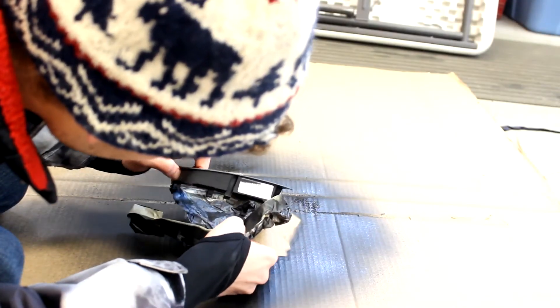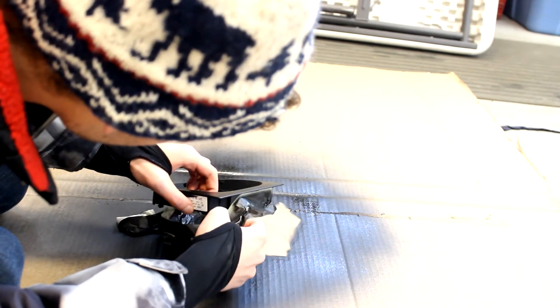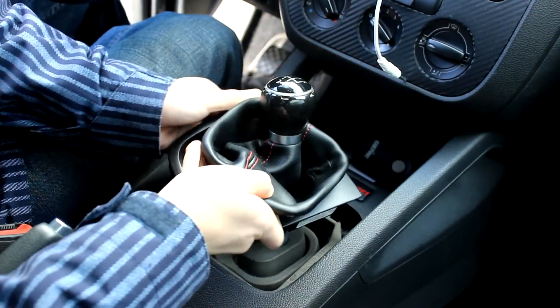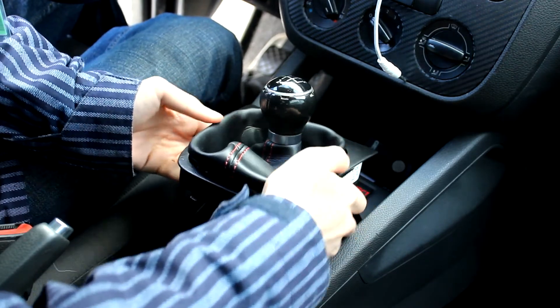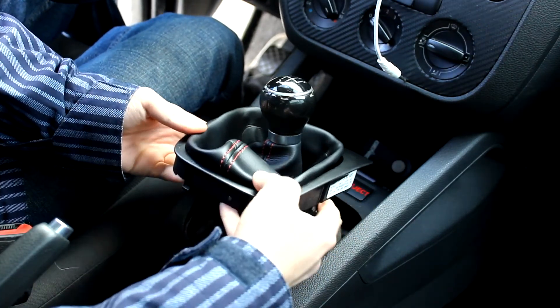Once your paint or plasti-dip is all dry, you could unmask it, revealing your work. Then you could reinstall your trim in your car, using the reverse process from whatever you did to take it out. Once your trim is reinstalled, your work is all done.